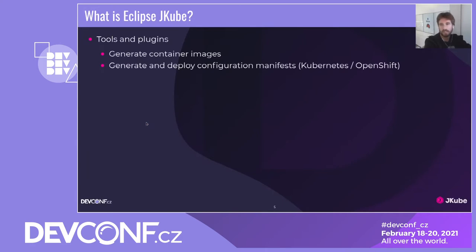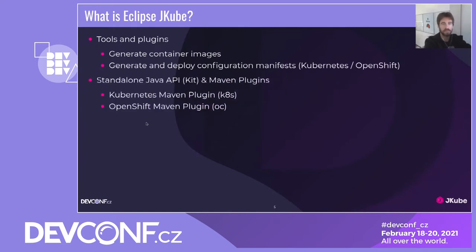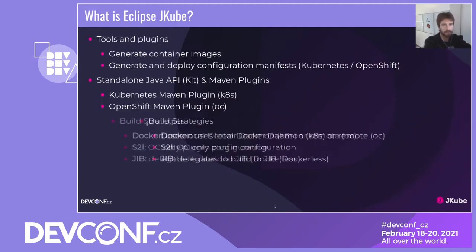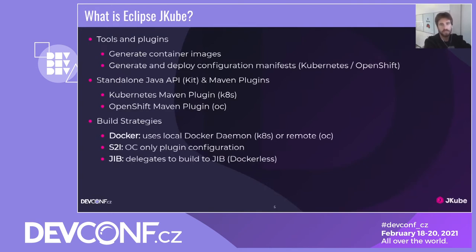Eclipse JKube is a set of tools and plugins that help you generate container images, generate configuration manifests, and deploy them to your cluster. The project consists of three components: the standalone Java API called 'kit', and two Maven plugins that use this API. The Kubernetes Maven plugin creates container images and deploys to a vanilla Kubernetes cluster. The OpenShift Maven plugin is built on top and provides OpenShift-specific features such as S2I build strategy. JKube supports Docker, S2I, or JIB build strategies, and you can easily switch between them just by changing a configuration flag.